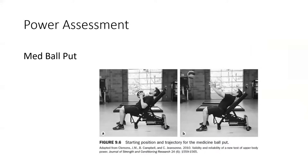For upper body power assessments, I like medicine ball throwing assessments. The med ball chest put is a forward chest pass in the sagittal plane, propelling a specific weight medicine ball as far as possible — can be done seated or standing. I also use the medicine ball shot put, which is a rotational throw, as well as a reverse throw where the athlete faces backwards and performs a granny toss overhead. These provide total body assessments for rotational and sagittal plane power rather than strictly upper extremity power.